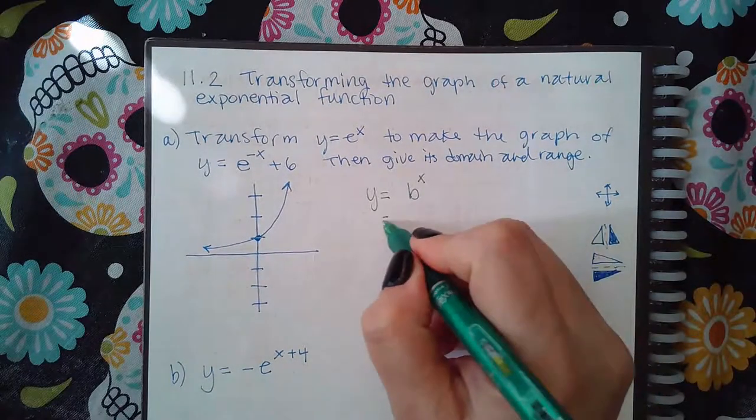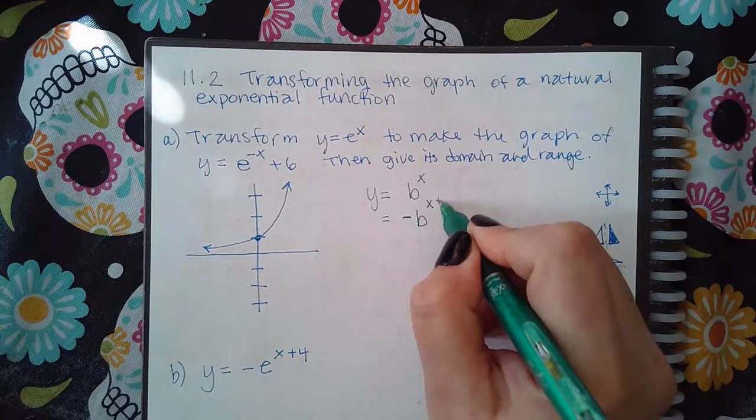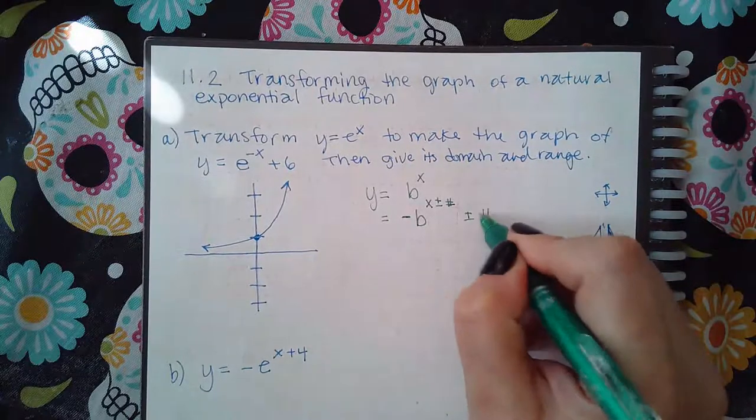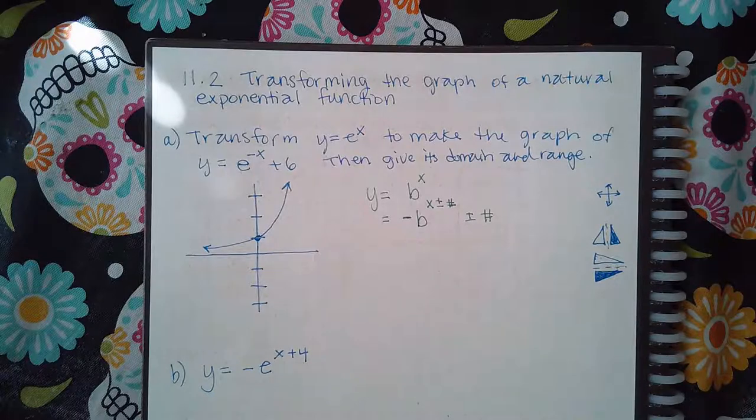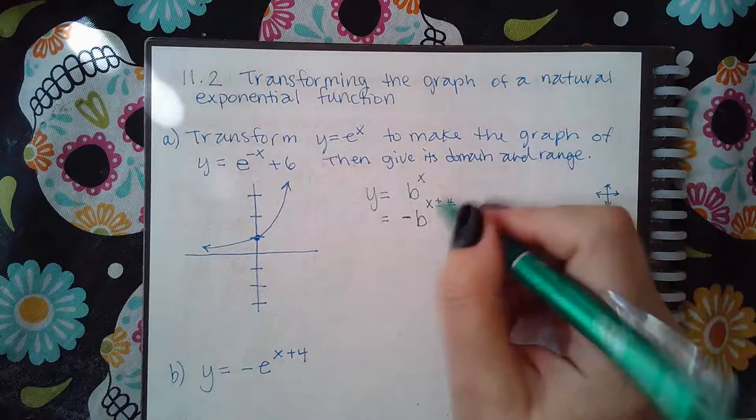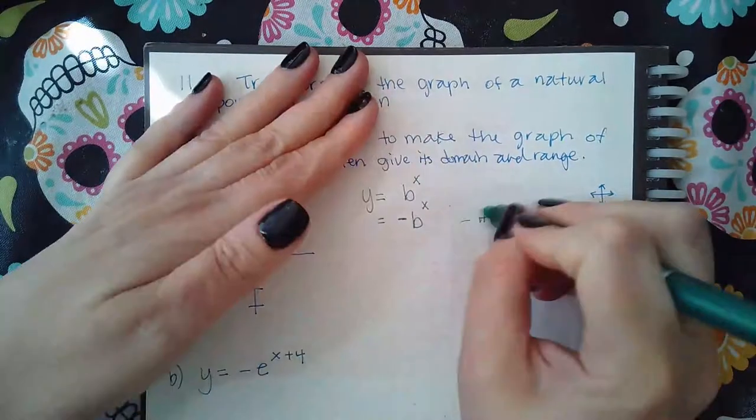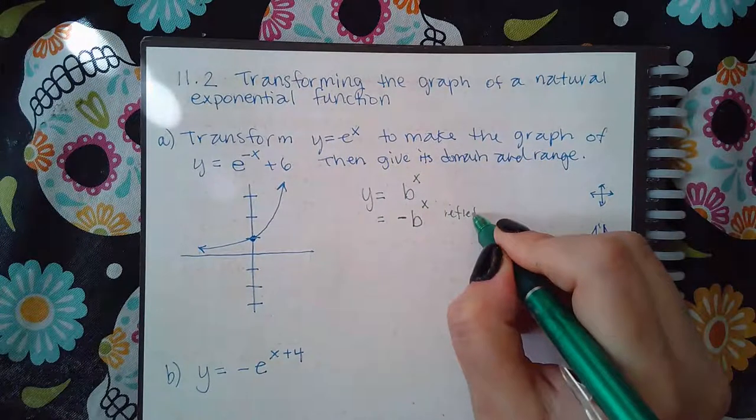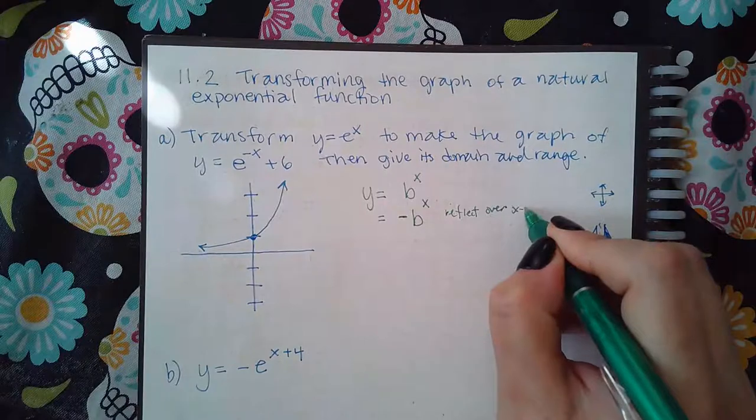If you put a negative out here, so there's a... okay, I'll just go over all the different transformations. So if you put a negative out there, what it's gonna do is it's gonna reflect over the x-axis.